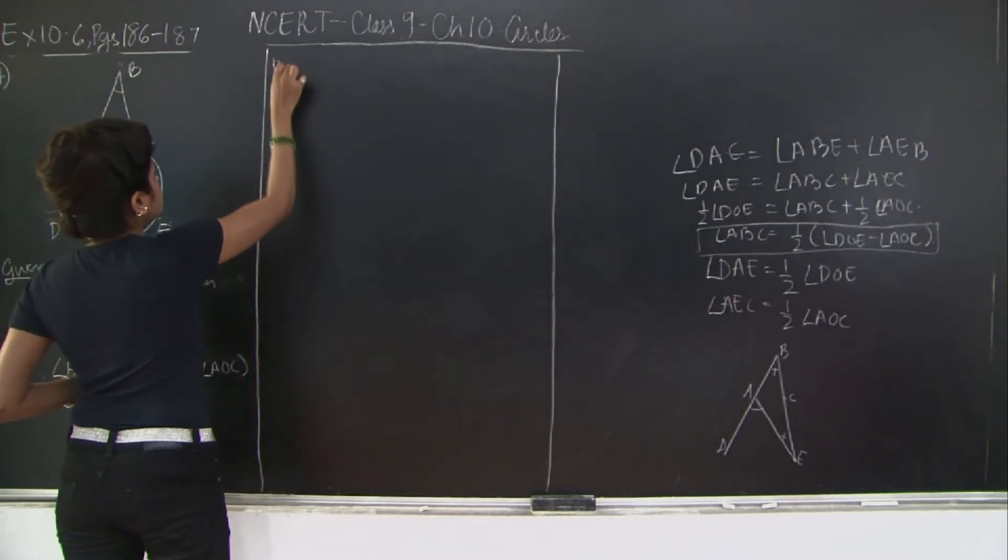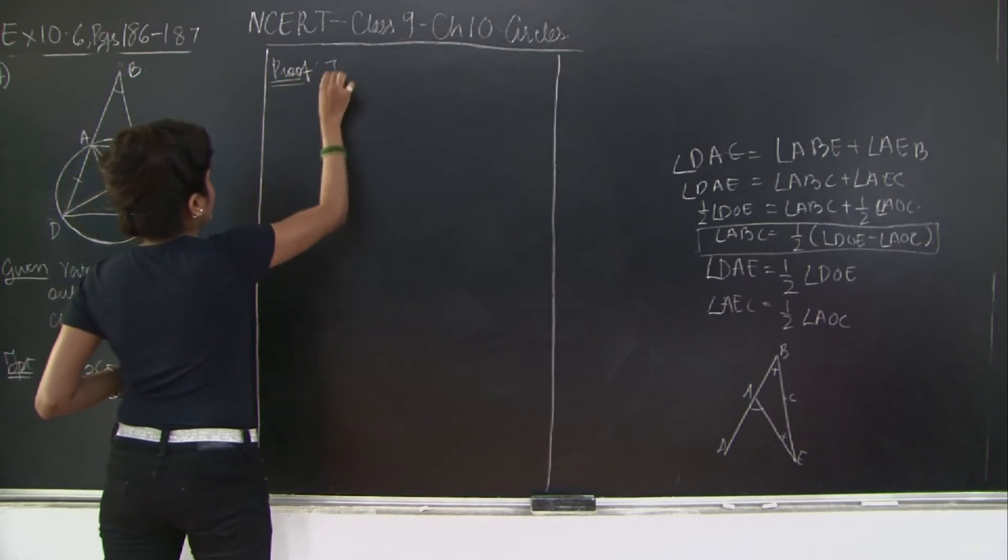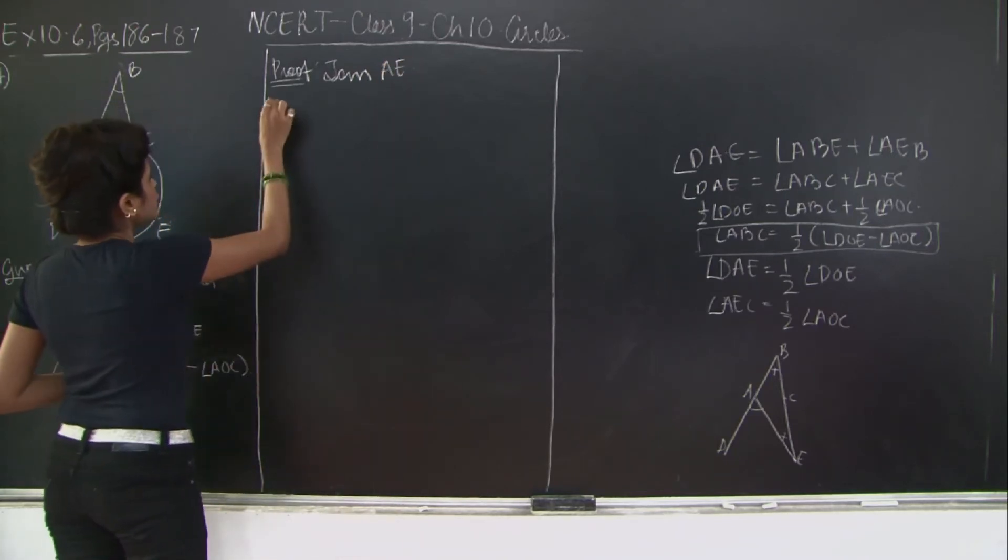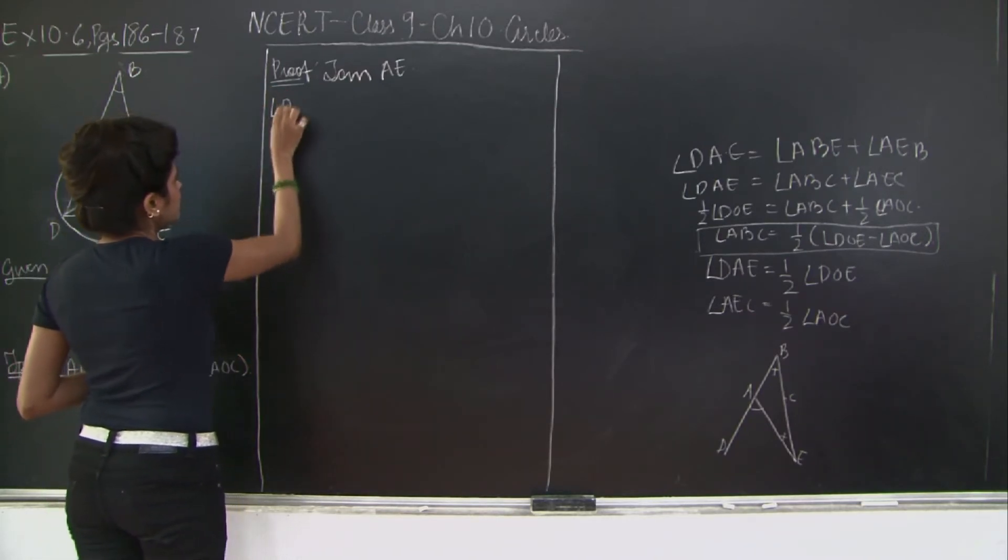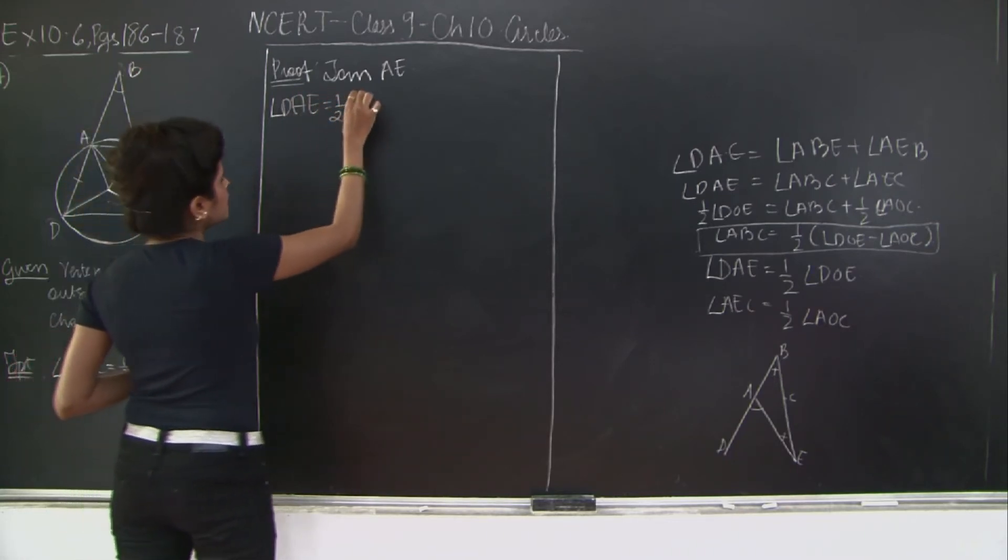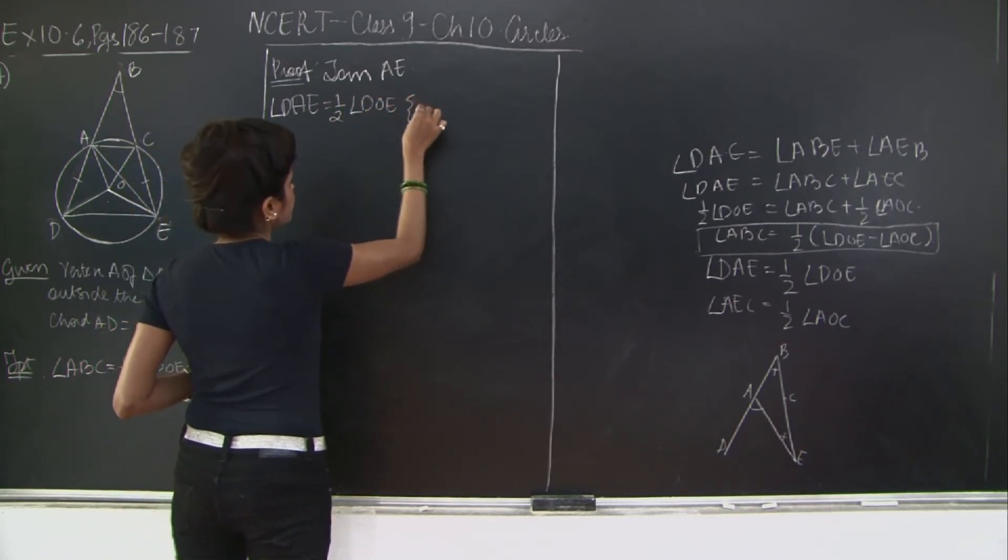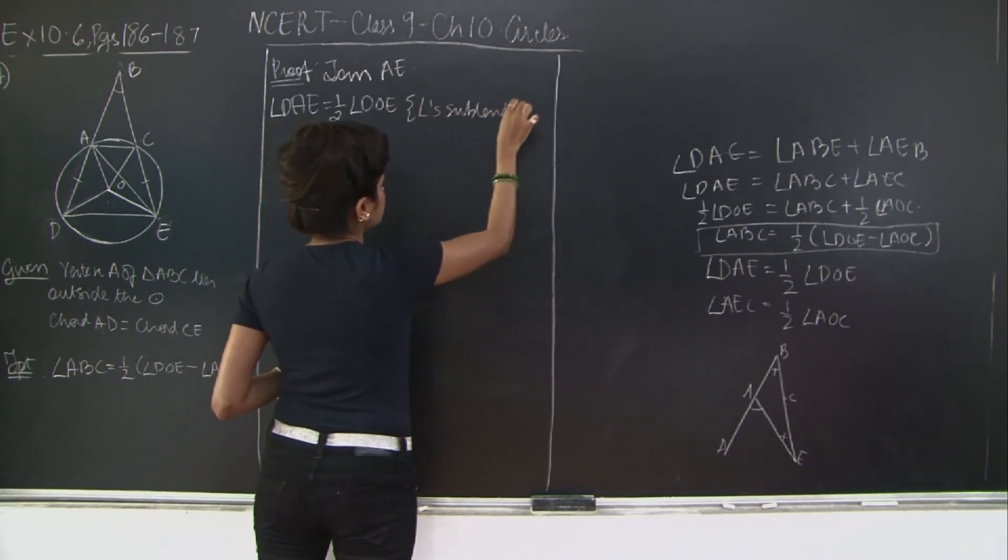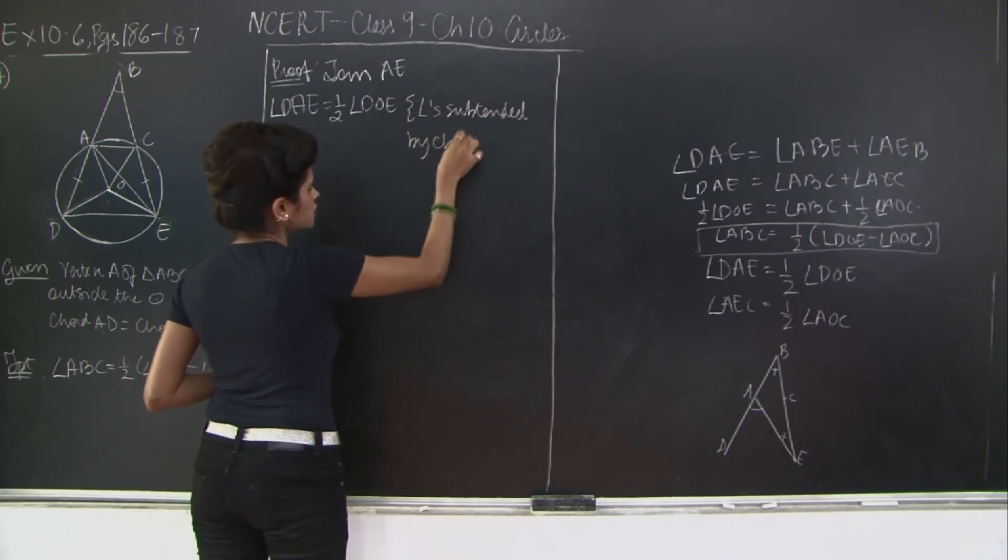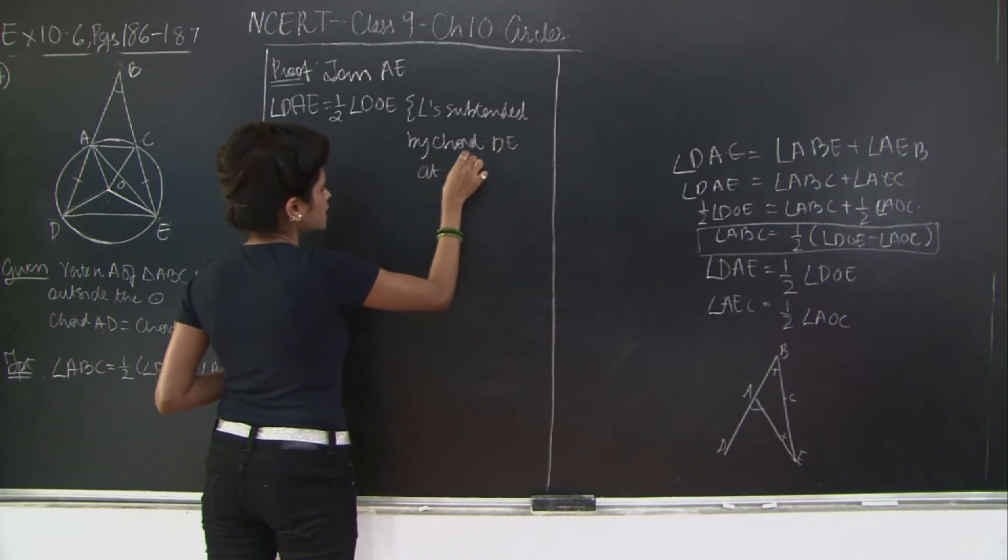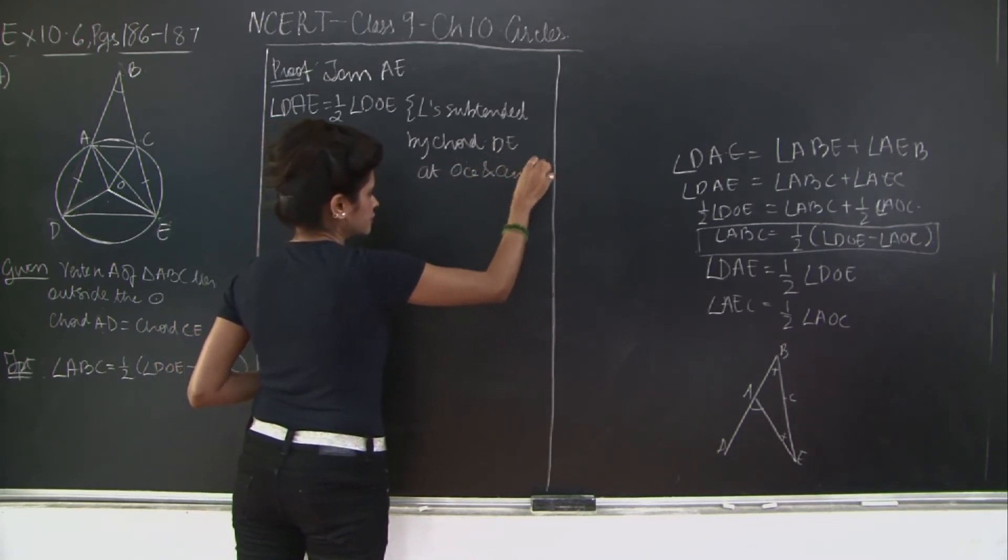I will say proof: join AE. So now I am going to say that angle DAE is equal to half angle DOE, angle subtended by chord DE at circumference and centre.